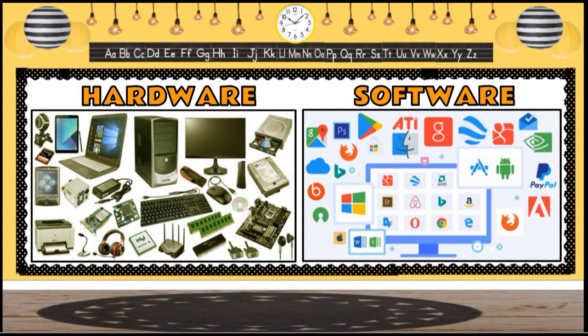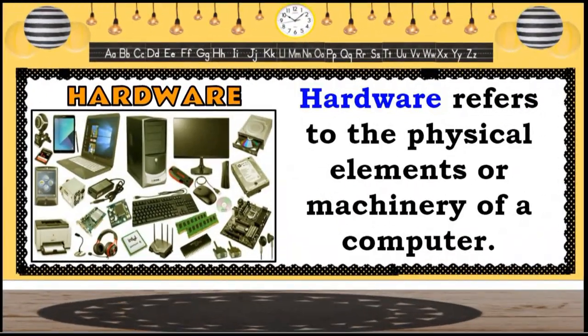Do you have any idea? Great. Hardware refers to the physical elements or machinery of a computer. This includes the keyboard, monitor, processing unit, and mouse. Some hardware can be seen inside a computer case, such as the hard disk drive and power supply unit.